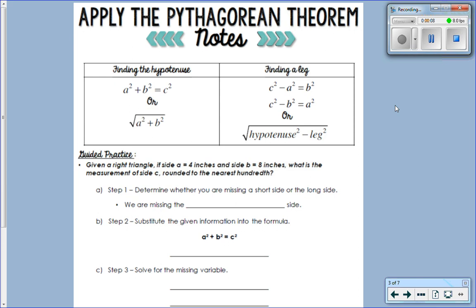On your notes we're looking at this side where it says finding the hypotenuse: A squared plus B squared equals C squared. This is on your reference material, there's no need to memorize it. You'll be able to use your reference material on a quiz or test.